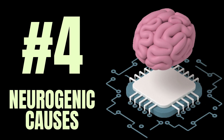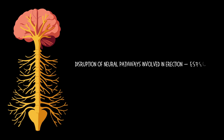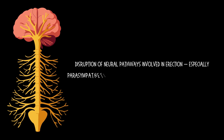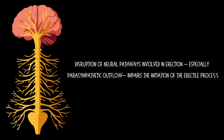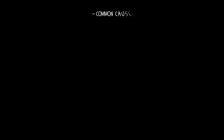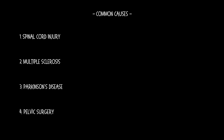Number 4: Neurogenic causes. Disruption of neural pathways involved in erection, especially parasympathetic outflow, impairs the initiation of the erectile process. Some common causes include spinal cord injuries, multiple sclerosis, Parkinson's disease, and pelvic surgery, which causes damage to the cavernous nerves.